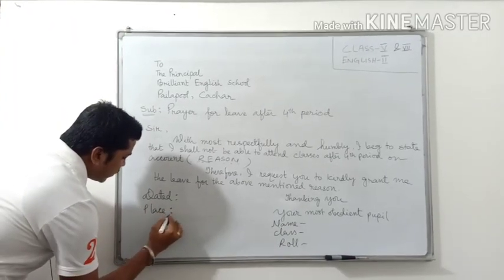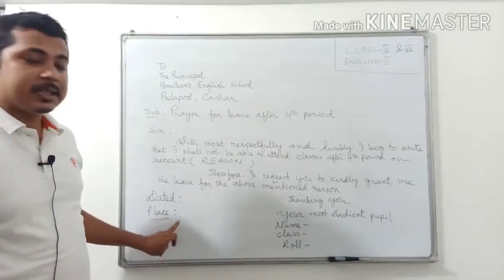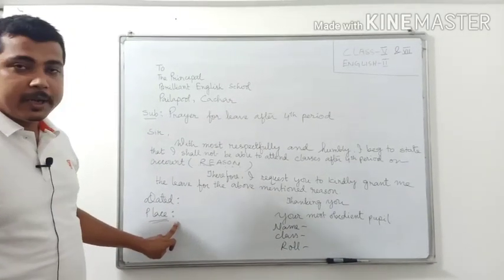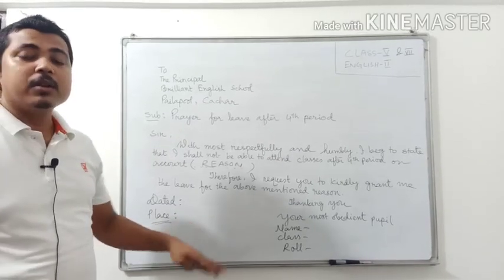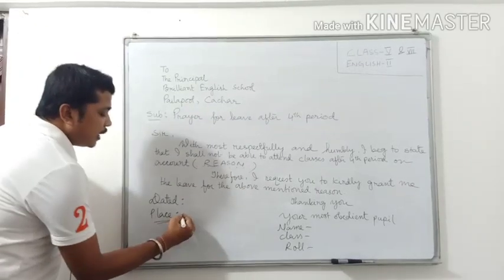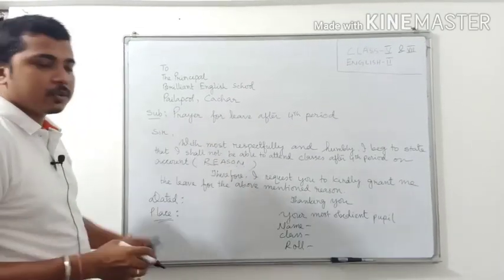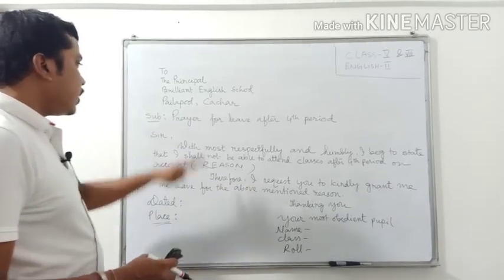Then place. Place means what is the address of your residence, your home address. Where you live? Either Labak, Pailapol, Fullartal, Lakhipur. That's simply one word you have to write. Labak, Dewan, Pailapol, Fullartal, like this.